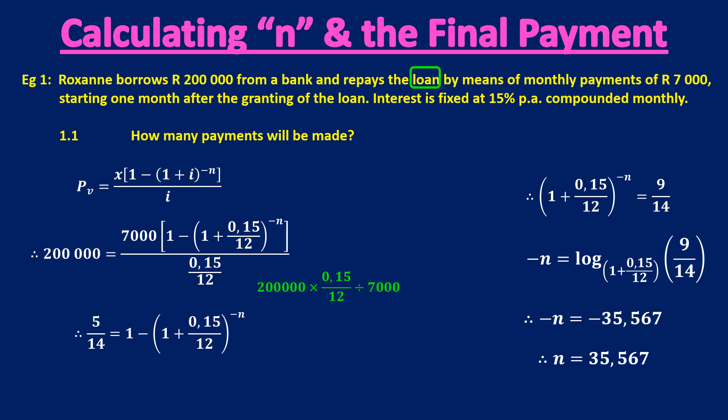Now, what does that mean? How can I interpret that answer? Well, what it means is she's going to make 35 full payments of 7,000 Rand. And then there's a smaller payment. That decimal indicates to me that there's another payment, but not a full payment. So in total, she will make 36 payments on this loan.